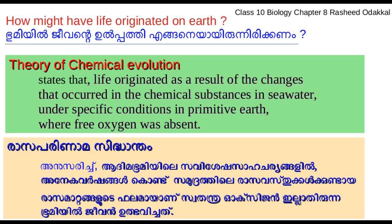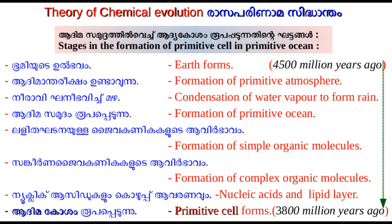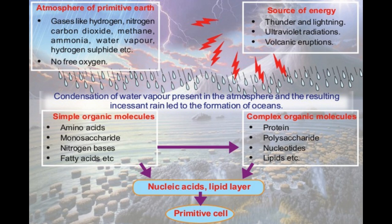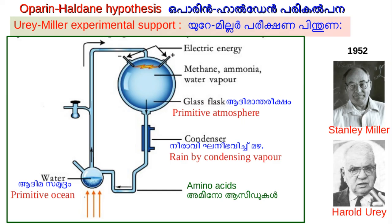According to the theory of chemical evolution, the inorganic gases formed in the primitive atmosphere reached the primitive ocean through rain and then formed simple organic molecules, then complex molecules and super complex molecules. A fatty envelope formed around the nucleic acid thus formed, and a primitive cell capable of division was formed. The absence of free oxygen and certain forms of energy led to this type of chemical evolution. Stanley Miller and Harold Urey later set up an experimental system to prove this idea and they could obtain organic molecules such as amino acids from inorganic gases.